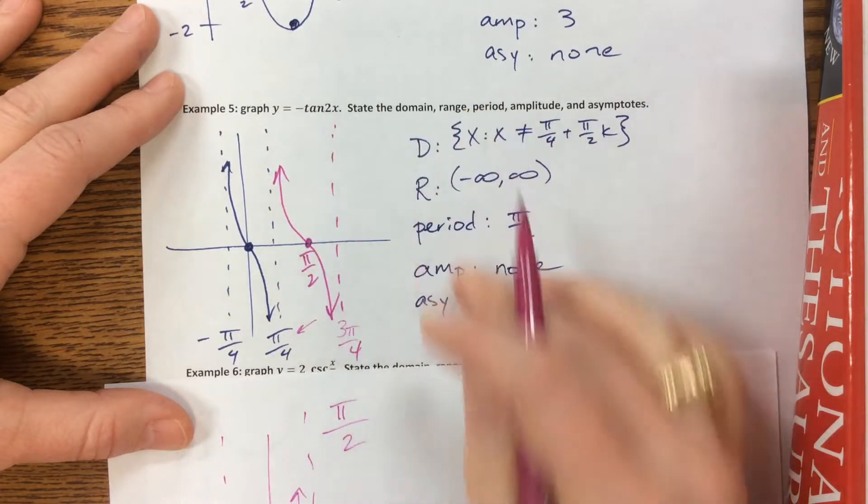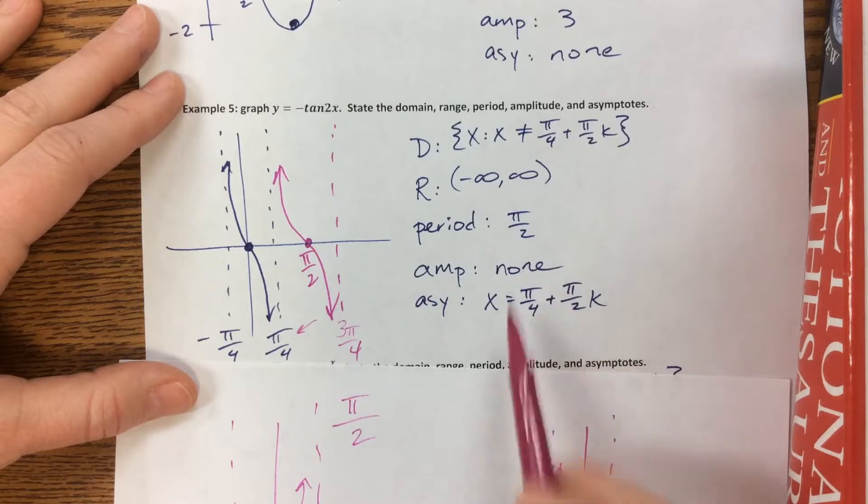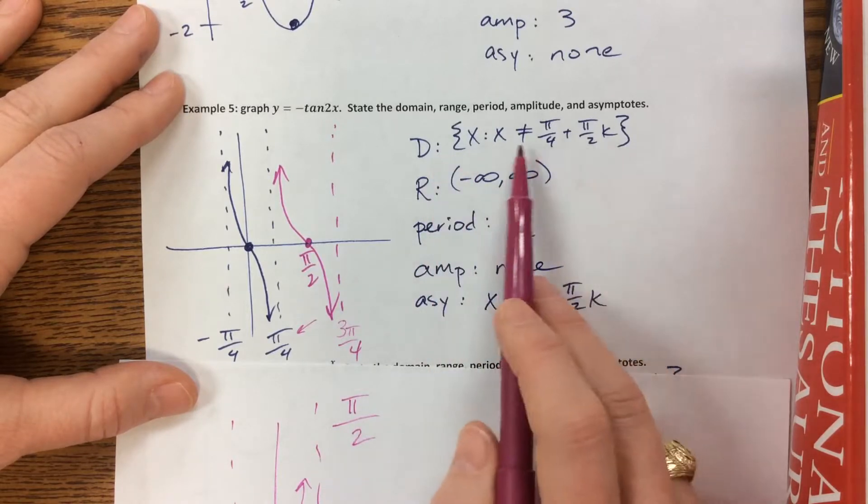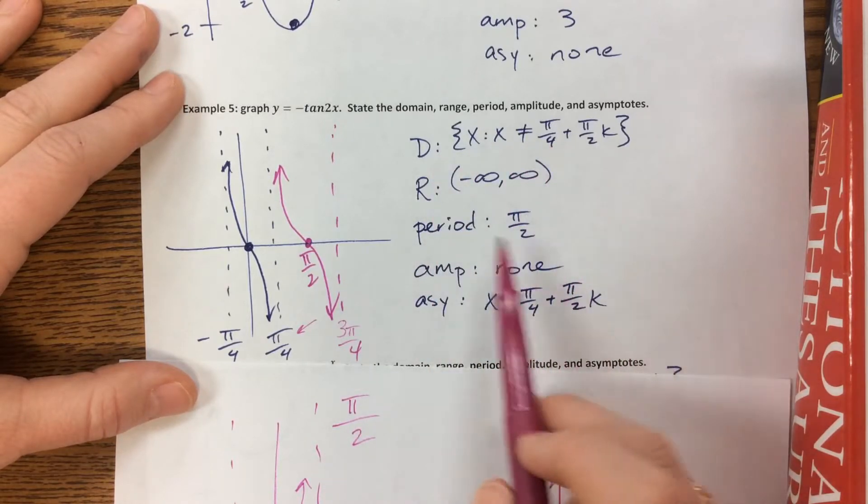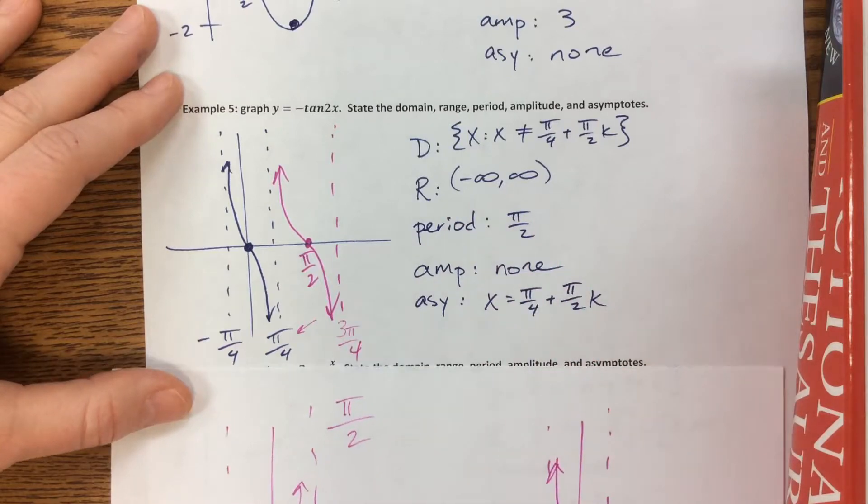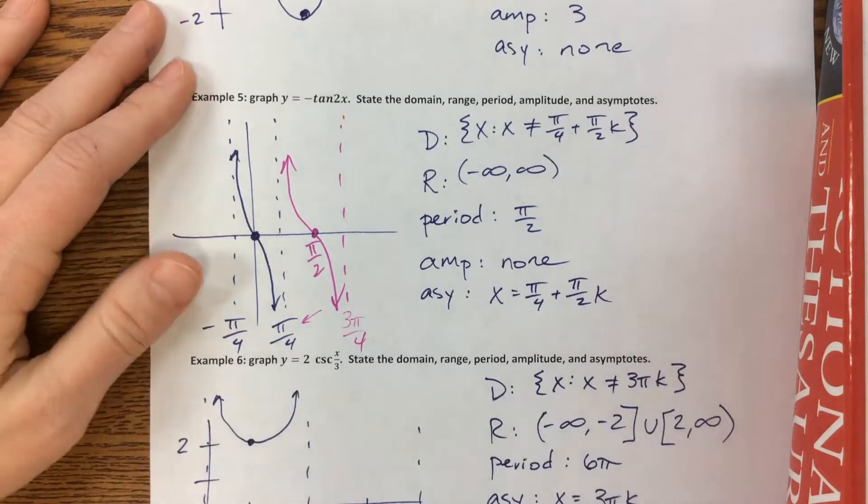So here, now I've given you two periods of that same graph. The domain coming back is everything but the asymptotes and the range is all reals.